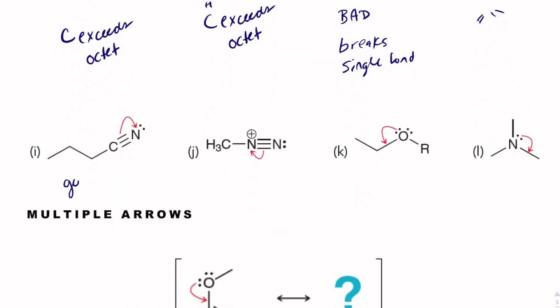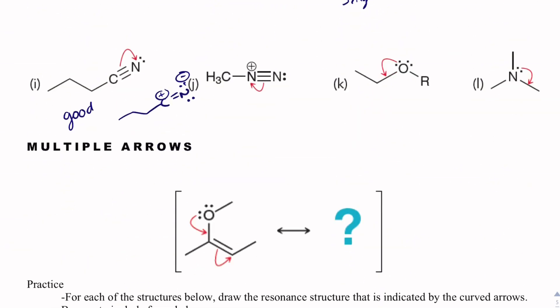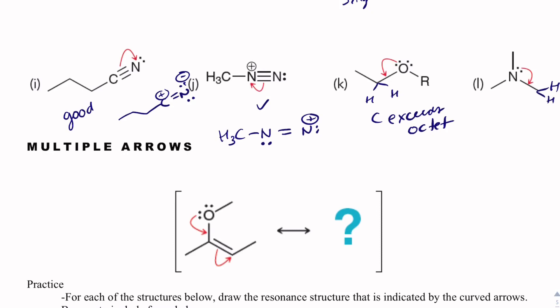This one is actually good — nitrogen gains electrons and ends up with two bonds and two lone pairs, which satisfies our combination-of-four rule, so nitrogen being negative is fine. This one also looks good: nitrogen ends up with three bonds and one lone pair — that works. This one is not good because carbon exceeds an octet. And here, this carbon already has four bonds, so that's no good either — C exceeds an octet.